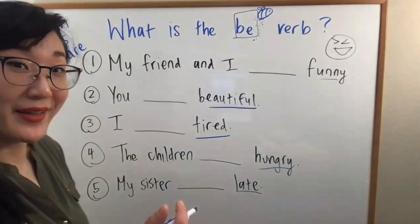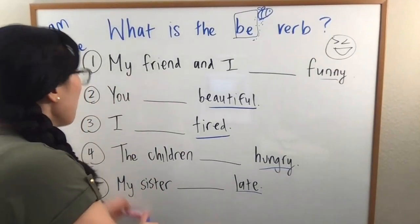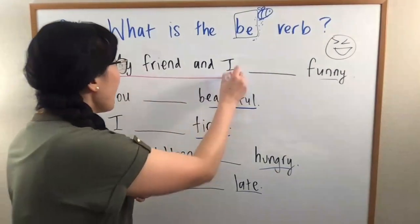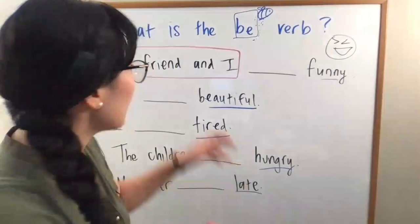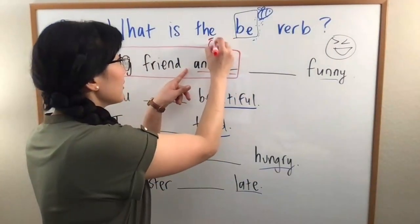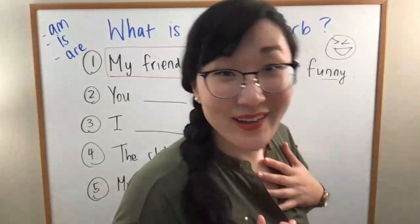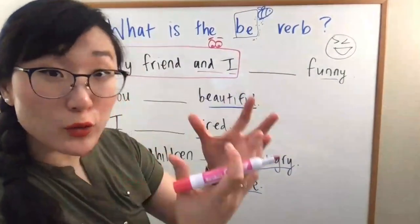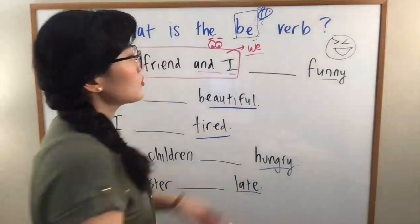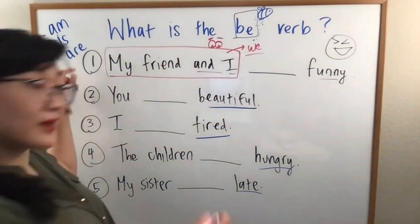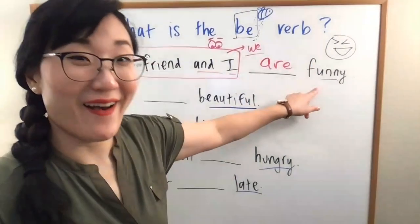When you are ready, you can press play and we will review these together. So, my friend. My friend and I. Any time in English, any time you see and I, I. This includes me. I am included in this group. So, and I. Oh, that means this is we. So, we. We are. We are funny. Ha, ha, ha, ha.